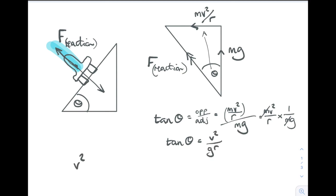Let's rearrange that further. So v² is gr tan theta. And square rooting everything, v equals the square root of gr tan theta. We met this with the conical pendulum as well.